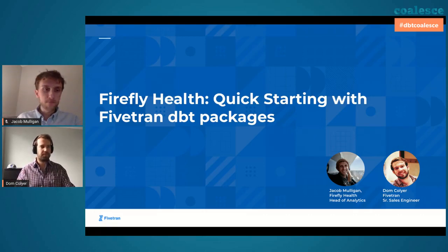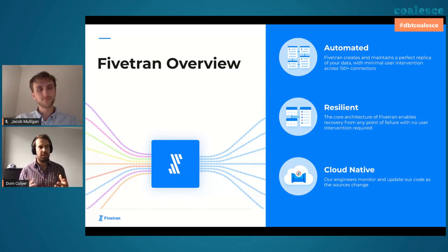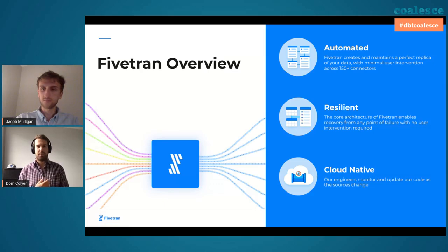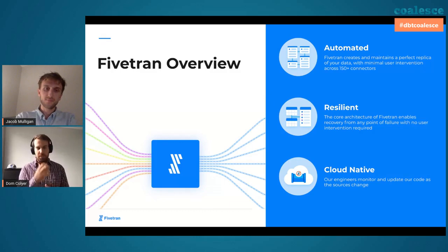Today we're going to talk about Fivetran and DBT packages and how they can improve the speed of your data engineering and analytics projects. So Fivetran is a fully automated data pipeline with over 150 connectors. The primary aim is to move your source data into a destination with zero code, a few clicks of configuration — essentially plug and play. Resiliency and data integrity is hugely important to us. Fivetran as a service will make sure that data is always flowing, with smarts to recover from any downtime and roll back to the last safe spot. We are fully cloud native and fully managed, which enables us to scale and meet your changing needs.